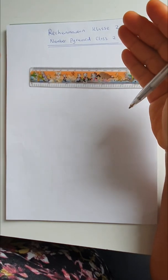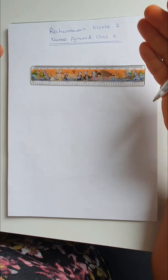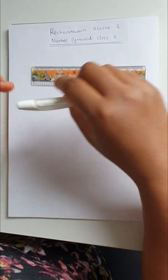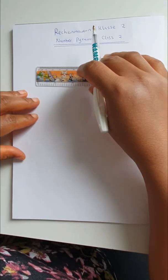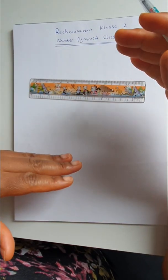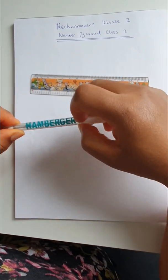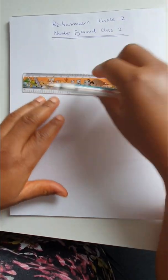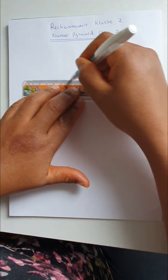So sit back and enjoy. Today we are going to be looking at Rechenmauern class, number pyramid class two. We will start with very small numbers and we will do some other ones with big numbers so that it will help the child to better understand how it goes. Let's start. First of all I will try to make some lines.